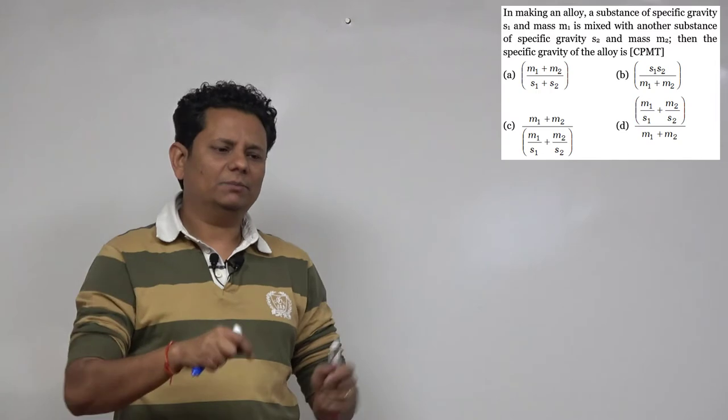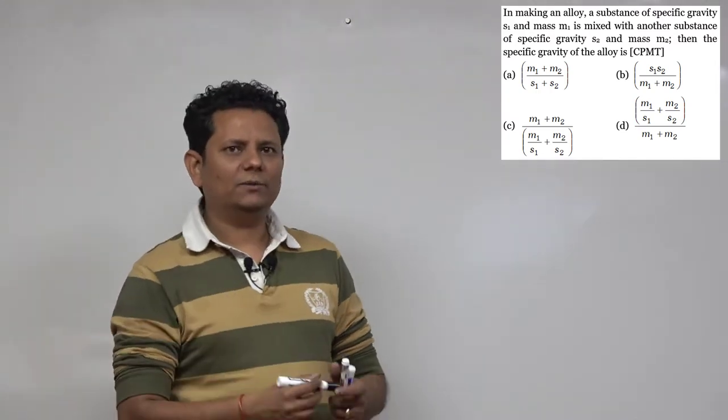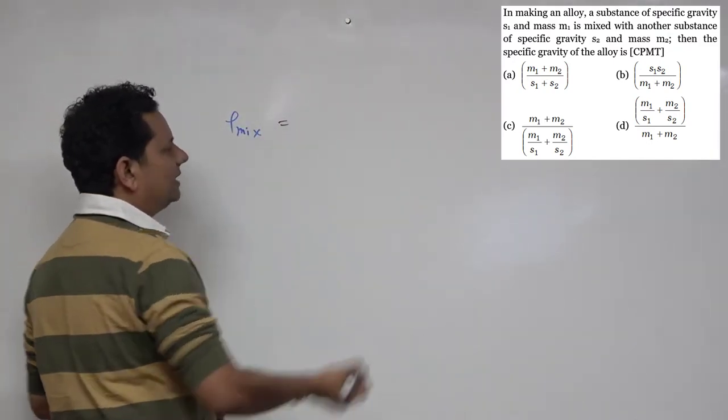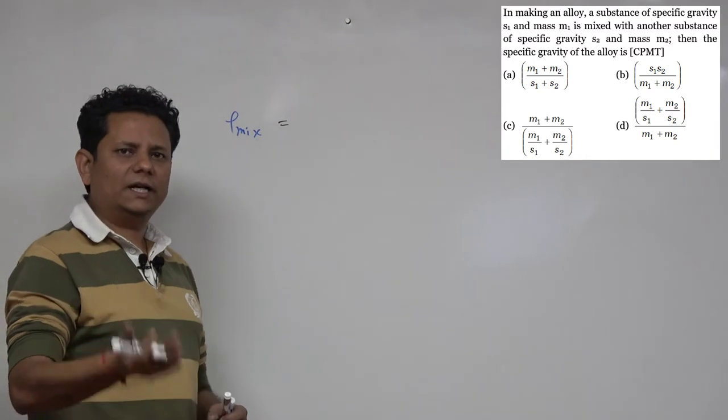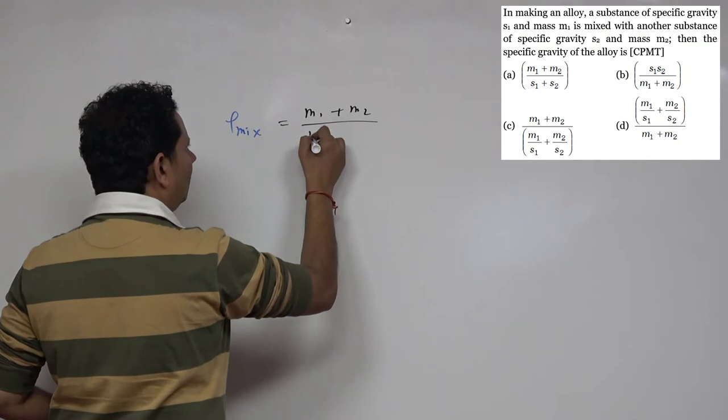The density of the mixture will be m1 plus m2 divided by volume 1 plus volume 2. This equals m1 plus m2 divided by the total volume, which implies...